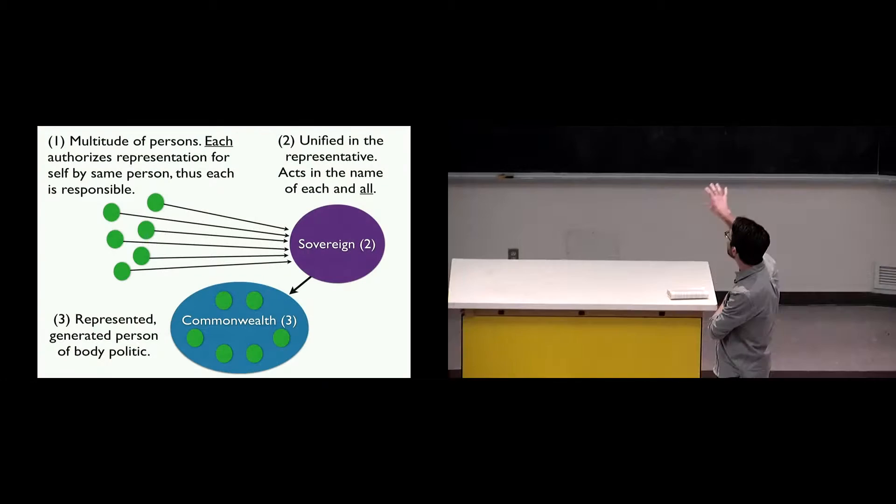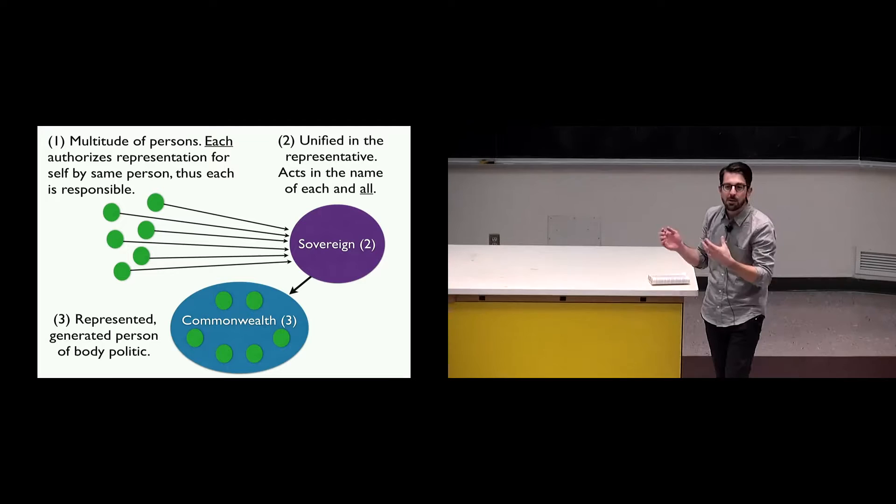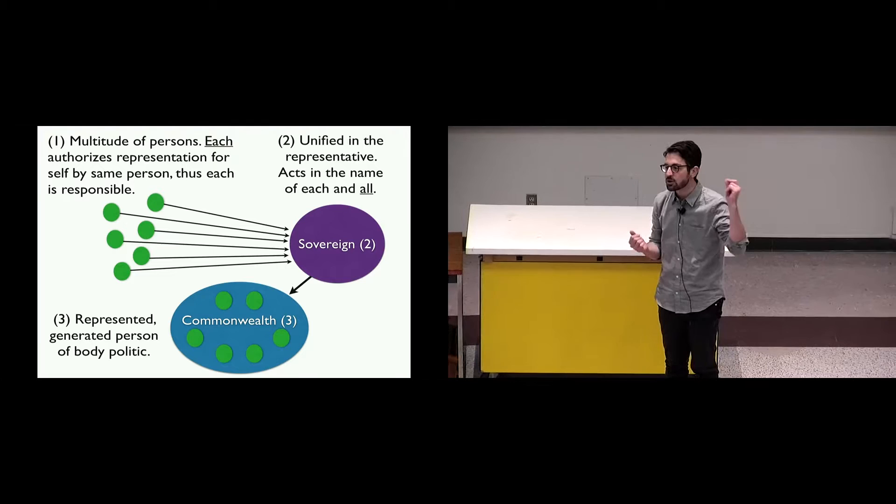In the name of this unity of us, which is this other person, this body politic, however you want to call it, this commonwealth. The commonwealth is a person. It is artificial, as he says there in the introduction. And so, in a weird way, it doesn't actually exist.